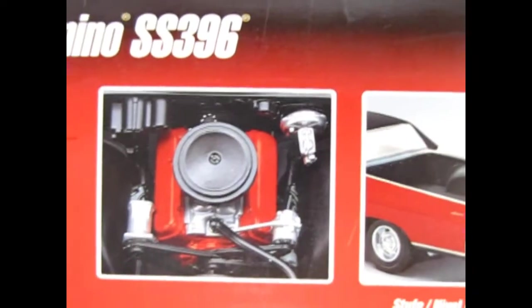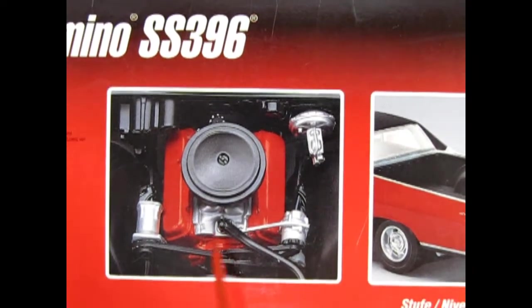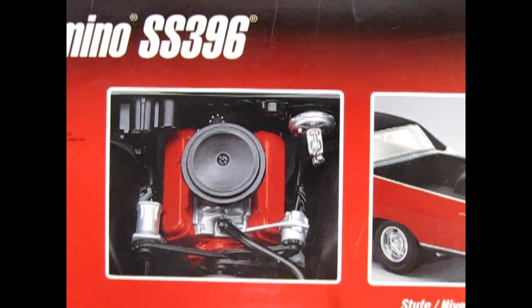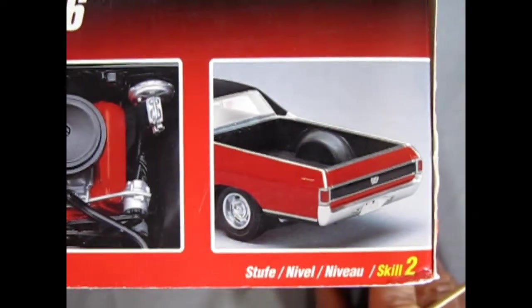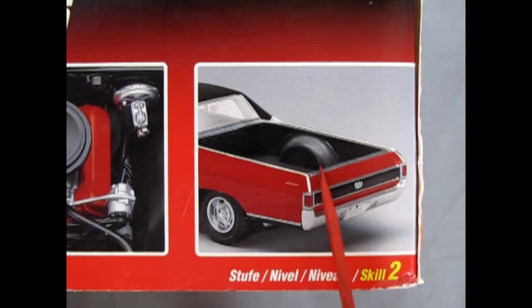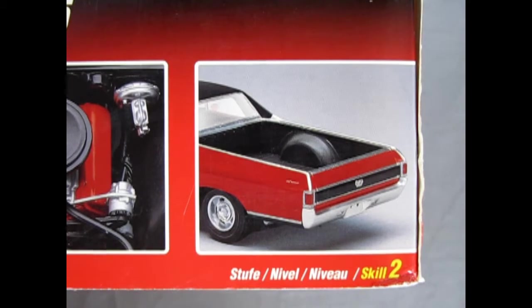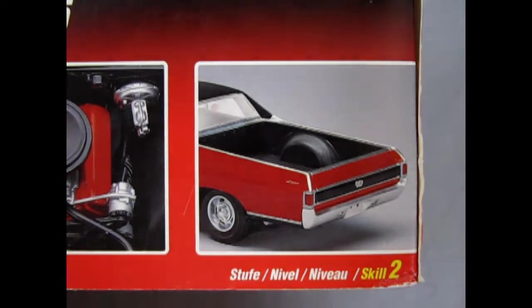I'll just zoom on in. We get that nice 396 SS engine with a huge air cleaner and the big valve covers which mean business. And then we've got the back end showing the pickup bed. So you've got a car and a truck all in one nice package.